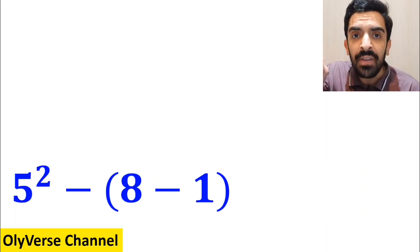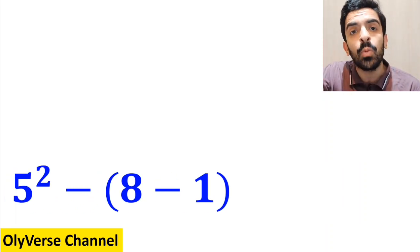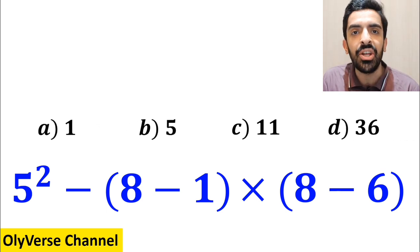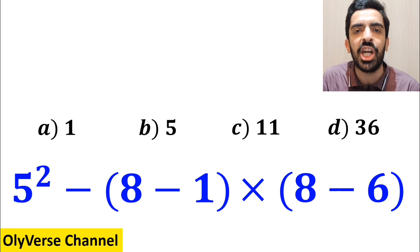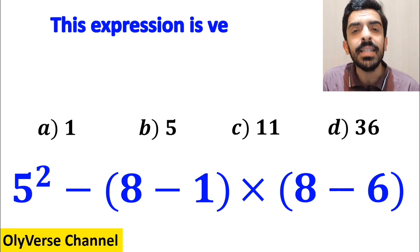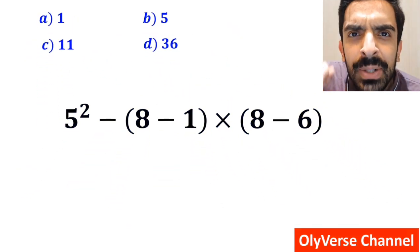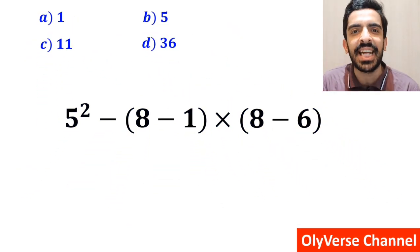What is the value of the expression 5 squared minus 8 minus 1 inside the parenthesis, then multiplied by 8 minus 6 inside the parenthesis? Which option do you think is the correct answer to this question? This expression is very deceptive and 99% of people get the wrong answer.